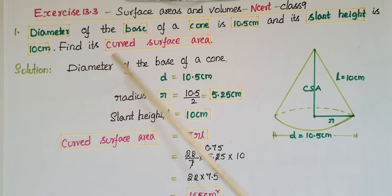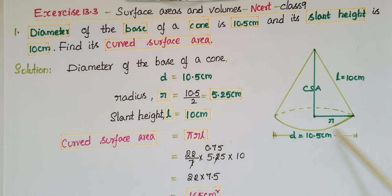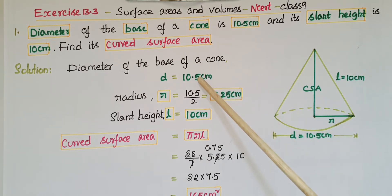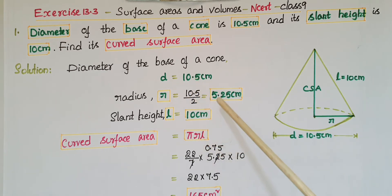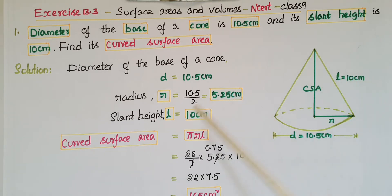Here, the diameter of the base of the cone is given as 10.5 centimeters. So radius is equal to diameter divided by 2, that is 10.5 by 2, which equals 5.25 centimeters. And the slant height l is equal to 10 centimeters.